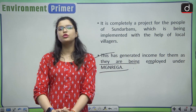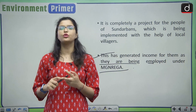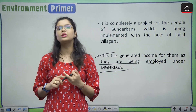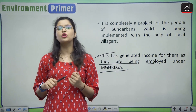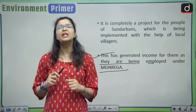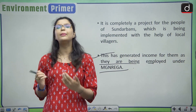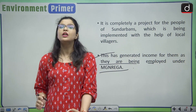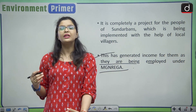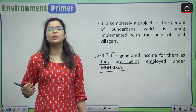In conclusion, we have seen the Sundarbans delta, understood what mangroves are, seen why there is a need to preserve the Sundarbans delta, and analyzed the impacts of climate change on it. Sundarbans delta is the world's largest mangrove forest and the only mangrove forest inhabited by tigers — the Royal Bengal tigers. We really need to have some proactive steps in preserving the Sundarbans delta.